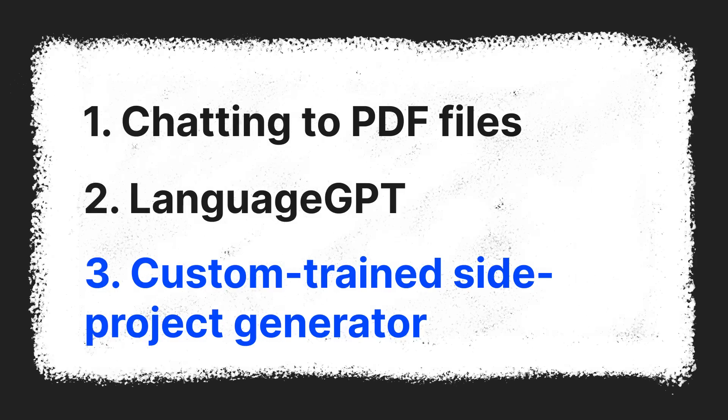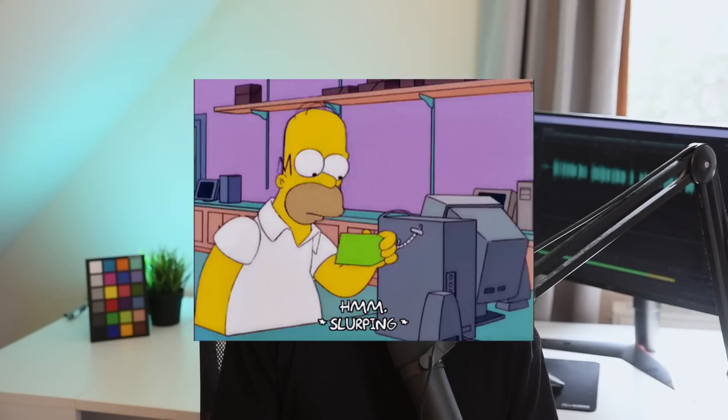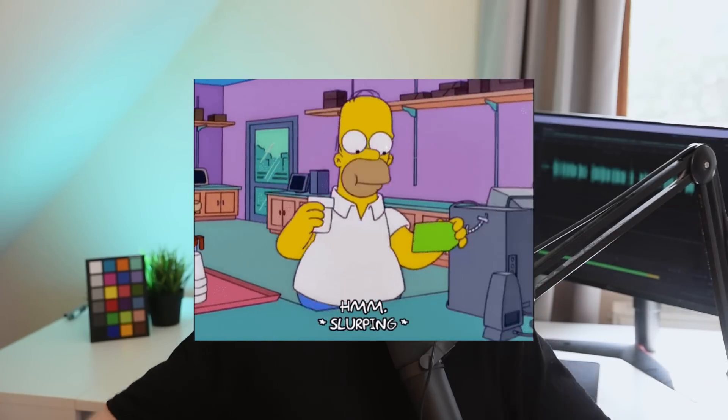Idea number three: just a couple days ago, OpenAI introduced the possibility to custom train ChatGPT models. I personally have trained a lot of GPT models, but the problem was you could only train the really expensive ones, so having a SaaS rely on custom trained models was incredibly expensive. You just couldn't possibly do it without selling your service for like 50, 60, 70 dollars — which is just way too much.